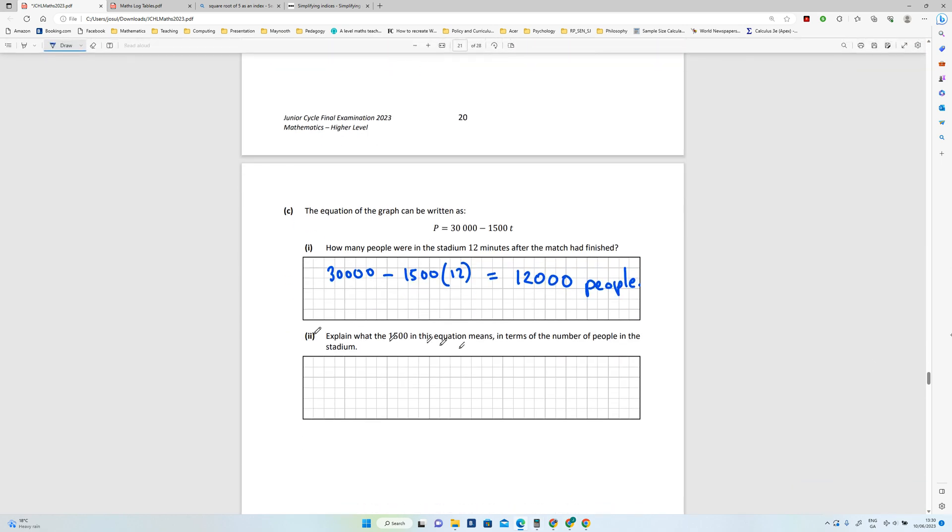Explain what the 1,500 in this equation means in terms of the number of people. So it's basically 1,500 people leave the stadium each minute.